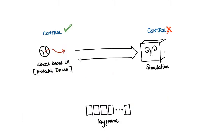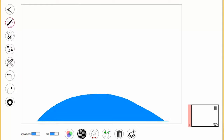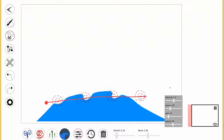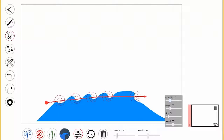As an interactive interface, Energy Brush exhibits the controllability of sketch-based user interfaces while exhibiting the time-varying dynamic effects of physical simulation. Intriguing dynamics arise through interactions among simpler energy patterns that themselves do not exhibit such properties.